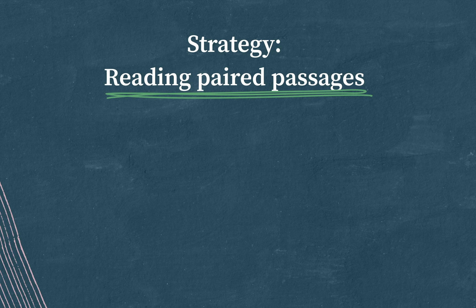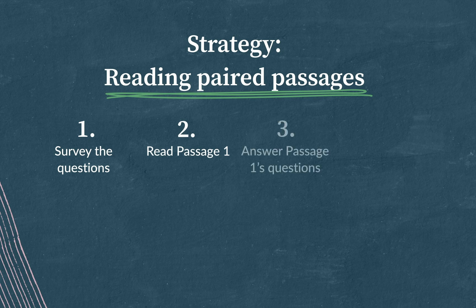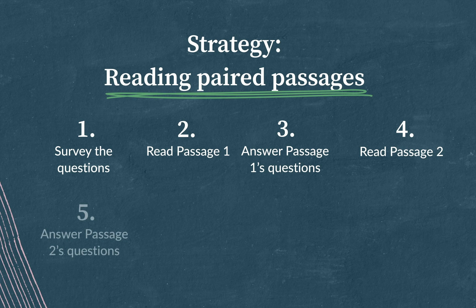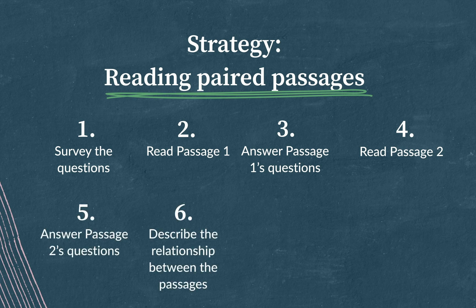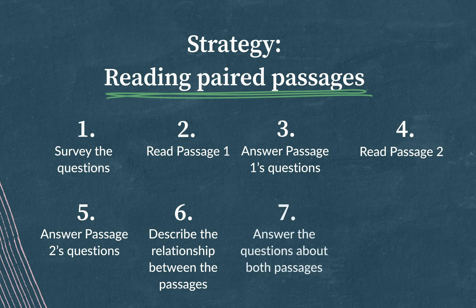So my strategy looks like this. First, survey the questions. Then read passage one. Then answer passage one's questions. Then read passage two. Then answer the questions about passage two. Then describe the relationship between those two passages. And only then go back and answer the questions that are about both passages.